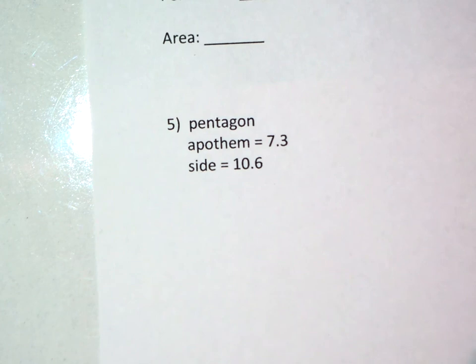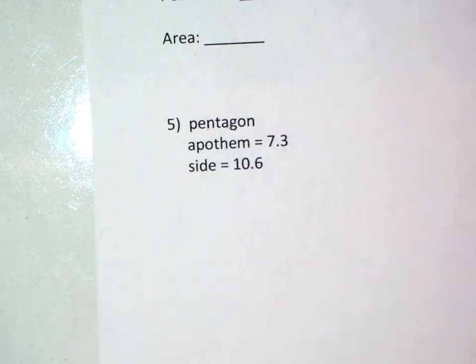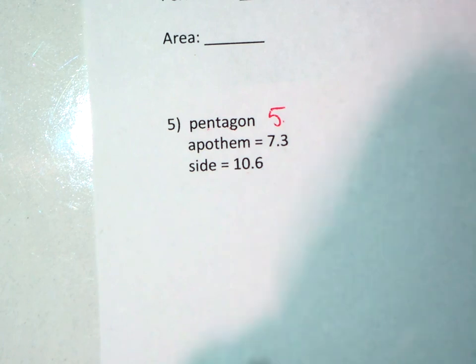Looking at problem number five, the shape is identified as a pentagon, which you should know is five sides. Five sides, and each one of them is 10.6, would give me a perimeter of 53.